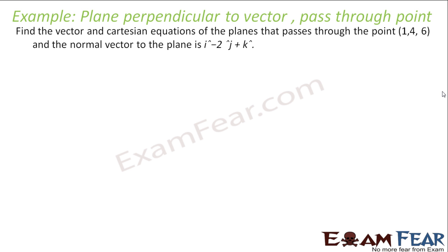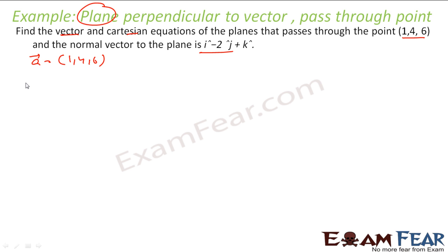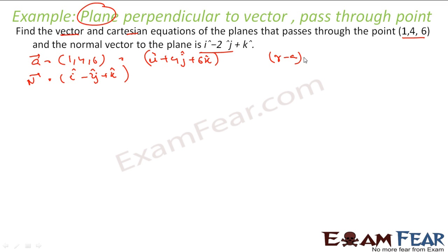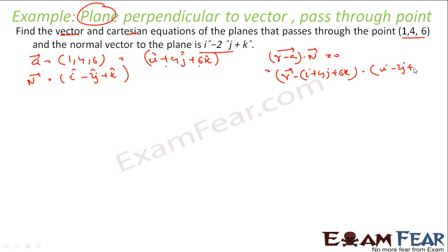Let's take one more example. Find the vector and Cartesian form of the plane passing through (1, 4, 6) and normal to i − 2j + k. So a-vector is i + 4j + 6k and n-vector is i − 2j + k. The vector form is: (r − a)·n = 0, which gives r minus (i + 4j + 6k), dot (i − 2j + k) = 0. This is the equation in vector form.